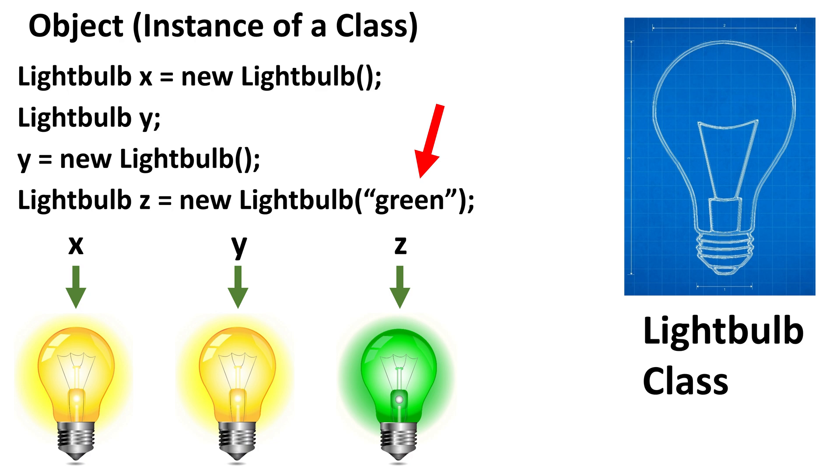Now you can't just pass anything you want to a class's constructor. The programmer of the lightbulb class determined what type of data the constructor could accept. When working with a class, you need to know what types of arguments you can pass to the constructor when making a new object.